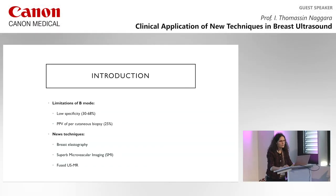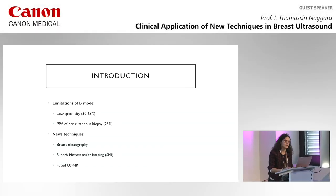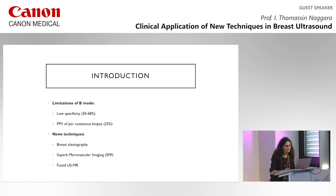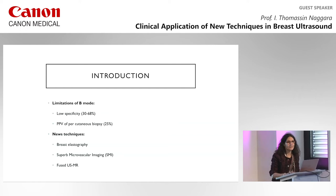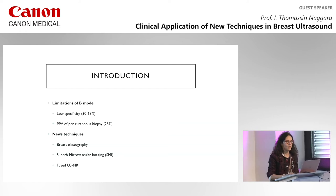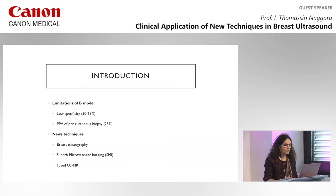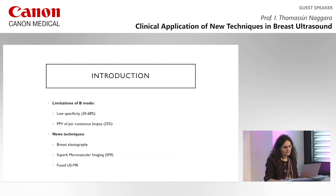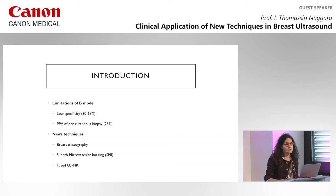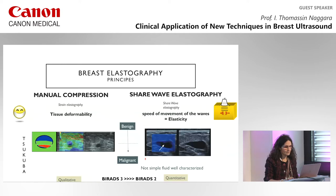In this lecture I will show you new techniques, because we know that on B-mode we have sometimes low specificity and we would really like to perform biopsy only for malignant lesions, so we want to improve our positive predictive value of malignancy. I will show you three new techniques: breast elastography, and what is new with Canon; the superb microvascular imaging; and a first preliminary experience of fusion ultrasound/MRI for breast imaging.